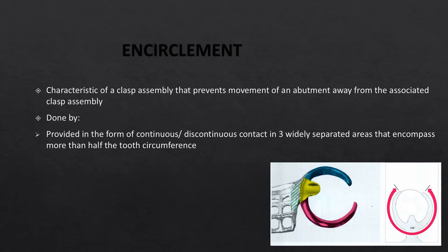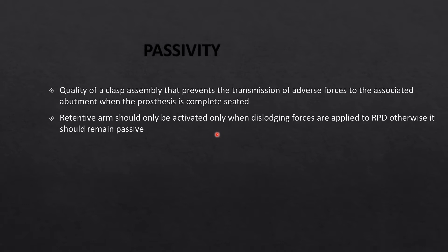Passivity is the quality of the clasp assembly that prevents transmission of adverse forces to the abutment teeth when the prosthesis is completely seated. When the prosthesis is seated, the retentive terminal should not engage the undercut and exert lateral or tipping forces on the abutment teeth — it should be completely passive. Only when the patient chews sticky foods or the CPD framework begins to dislodge should the clasp become active — the retentive arm should only be activated when dislodging forces are applied.